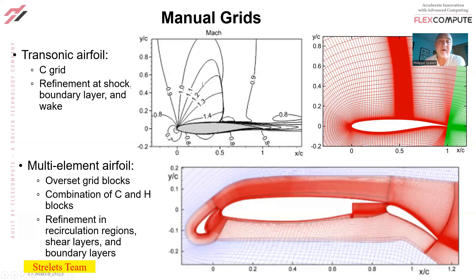The Mach number contours on the left show you the shock, the supersonic region, the boundary layers, and the wake. I noticed just this morning that with the separation, the turbulent layer had actually run out of the fine region of the grid. So one of the hardest things to do is to predict the future thickness of the boundary layer at different angles of attack.